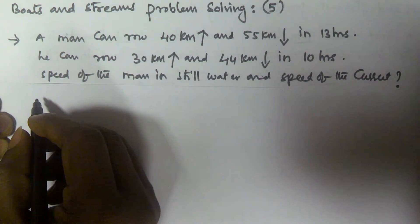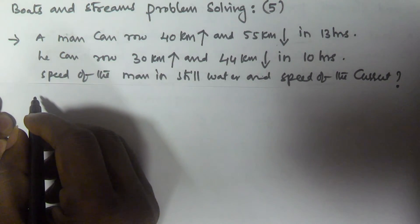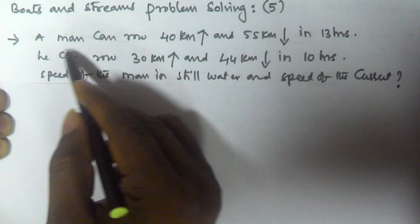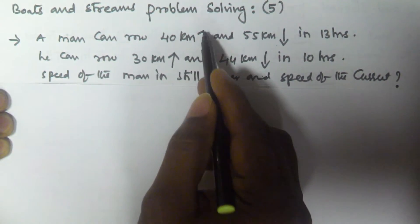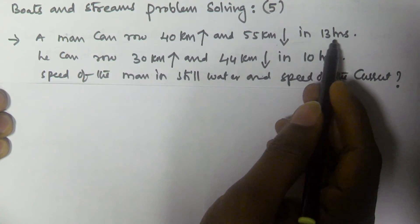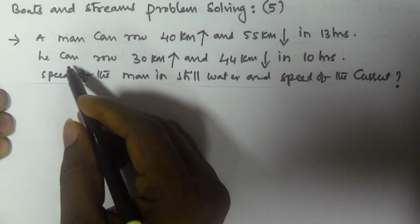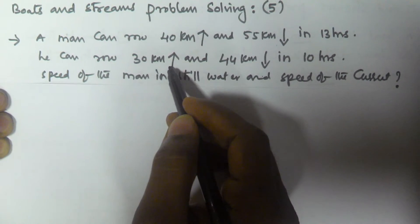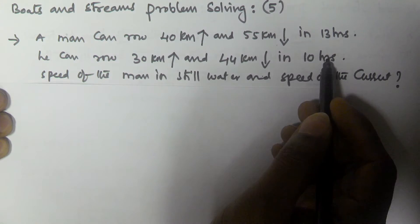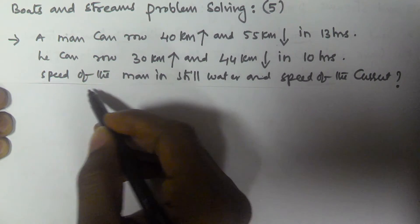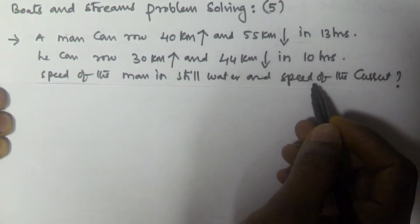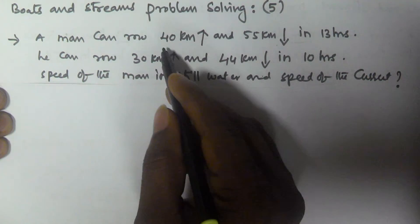Hello friends, in this video we will solve a problem related to boats and streams. A man can go 40 kilometers upstream and 55 kilometers downstream in 13 hours, and the same man can go 30 kilometers upstream and 44 kilometers downstream in 10 hours. We have to find the speed of the man in still water and the speed of the current.